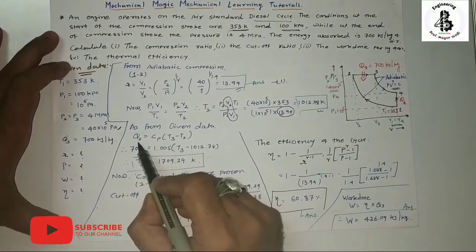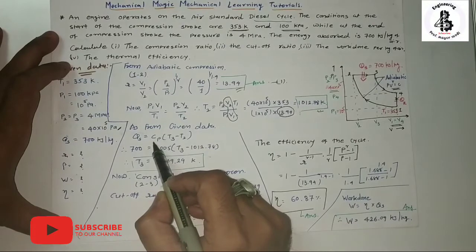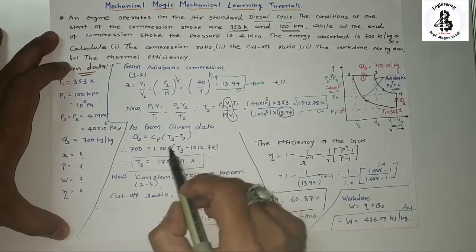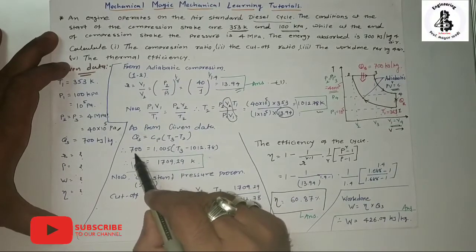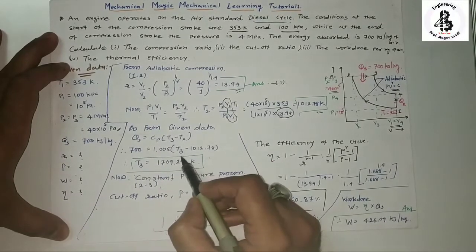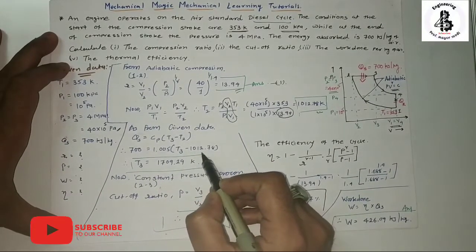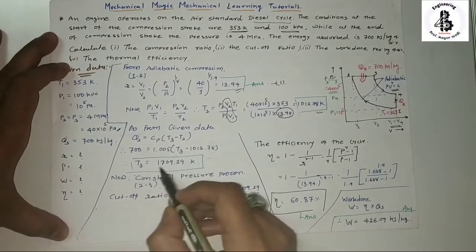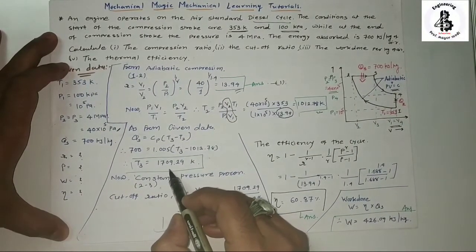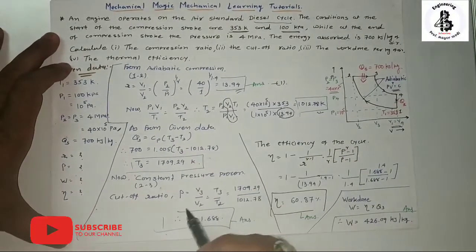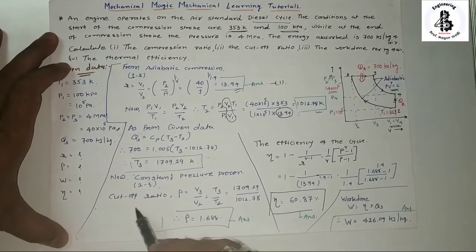From the given data, Q_supply = Cp × (T3 − T2). With Q_supply = 700 kJ/kg and Cp = 1.005 kJ/kg·K, substituting T2 = 1012.78 K: 700 = 1.005 × (T3 − 1012.78). Solving gives T3 = 1709.29 Kelvin.